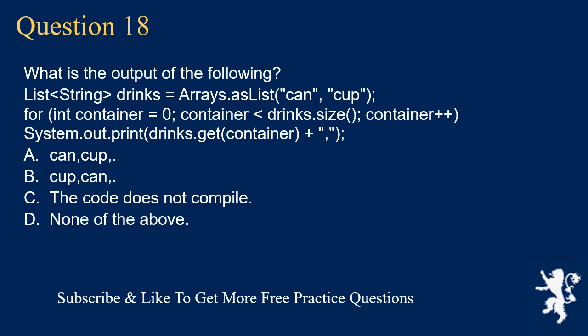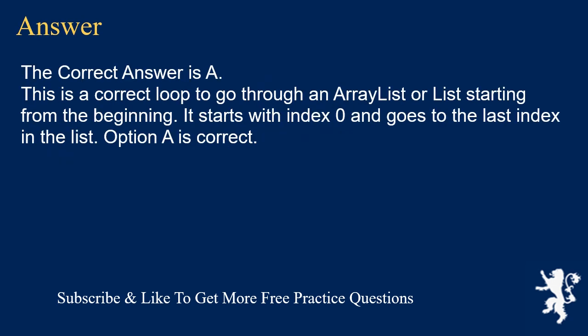Question 18. What is the output of the following? List<String> drinks = Arrays.asList("can", "cup"); for (int container = 0; container < drinks.size(); container++) { System.out.print(drinks.get(container) + " "); } A. can cup. B. cup can. C. The code does not compile. D. None of the above. The correct answer is A. This is a correct loop to go through a list starting from the beginning, starting with index zero and going to the last index. Option A is correct.